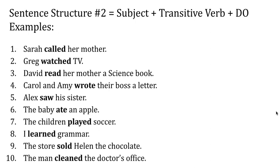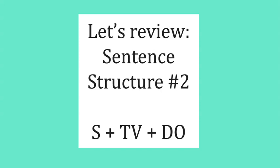Some sentences also have indirect objects. For example, sentence three has both an indirect object and a direct object. Sentence four also has two different nouns after the transitive verb — an indirect object and a direct object. Pause the video here to study these examples more carefully. Let's review what we learned: sentence structure number two is subject plus transitive verb plus direct object.